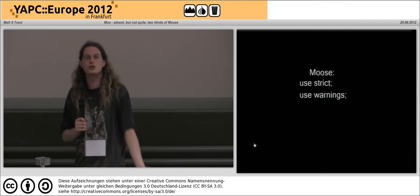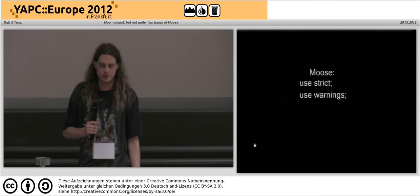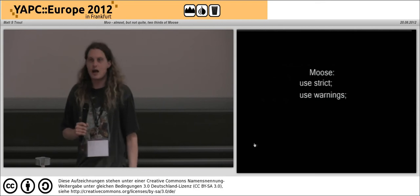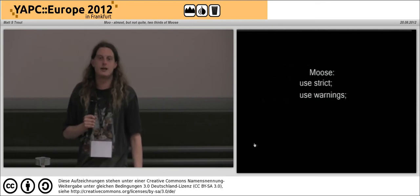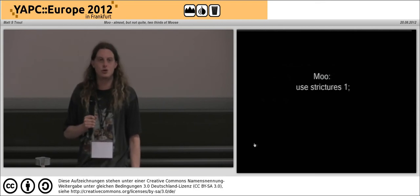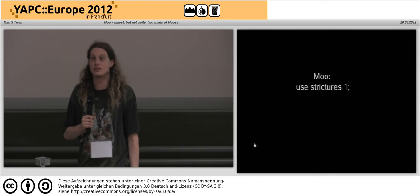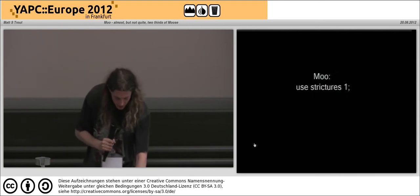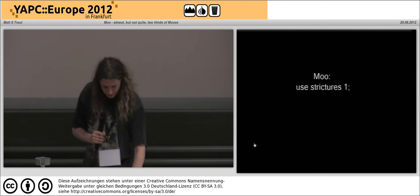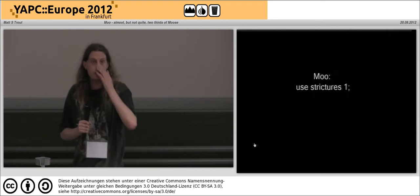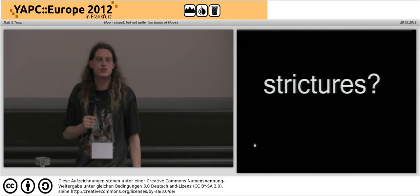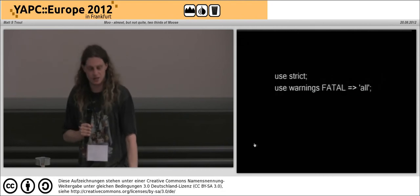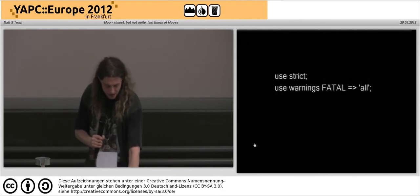Moose turns on strict and warnings — again, stolen out of a piece of my code without any thought as to whether I got the design right, sadly. Moo uses strictures, which I think is the right answer for this case.